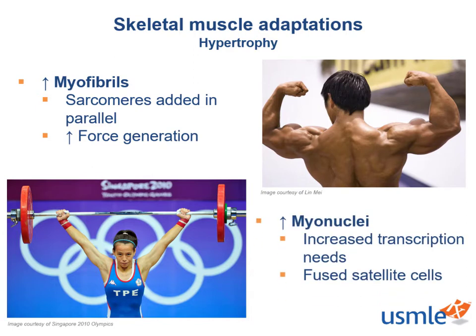During muscle hypertrophy, we see an increase in the number of myonuclei as well. Satellite cells within our muscles are the muscle stem cell population. When our muscles are exposed to heavy mechanical loads, they activate and enter into the cell cycle to eventually fuse with existing myofibrils. The donation of myonuclei assists in the increased transcriptional requirement needed to keep up with all that muscle growth and repair. After all, all the proteins and sarcomeres behind our gym gains have to come from somewhere.